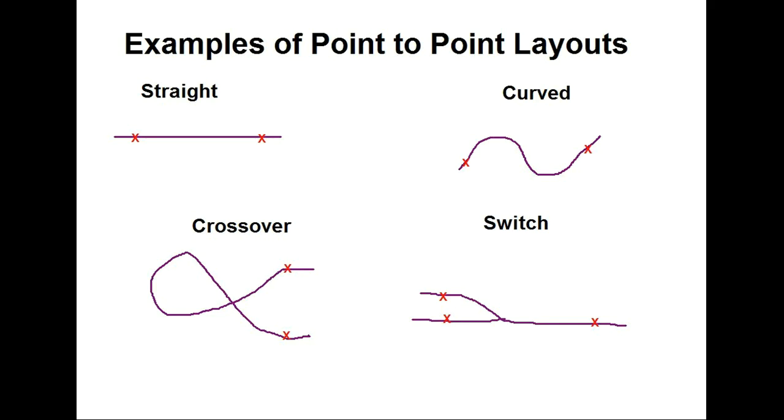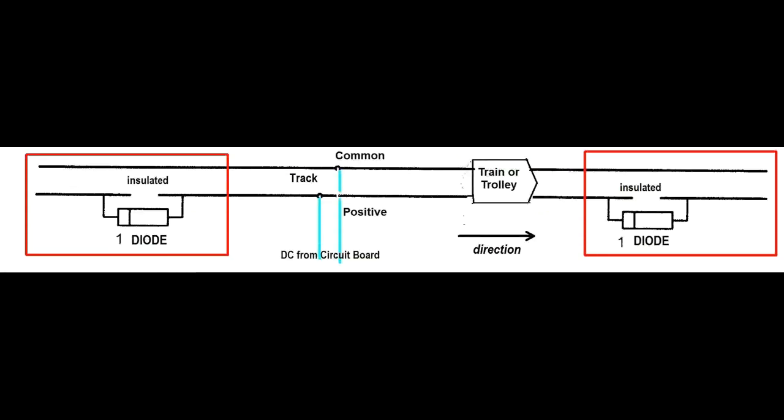At the ends of each layout, a section of track will be isolated to stop the train or trolley. Diodes are used here to control current flow at these ends as the relay changes the current direction.